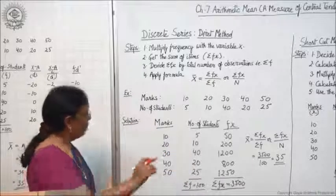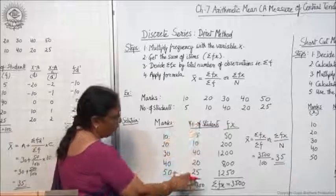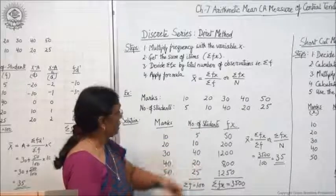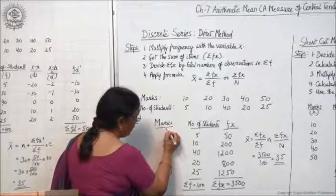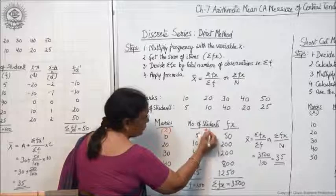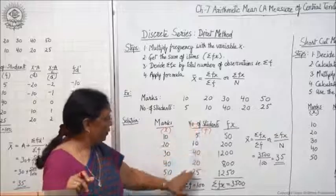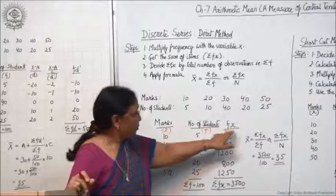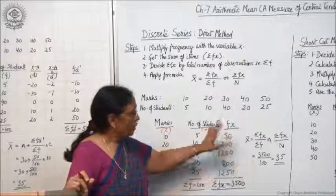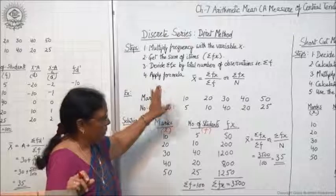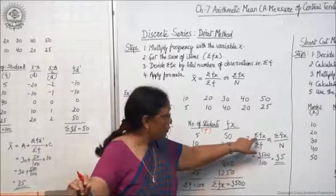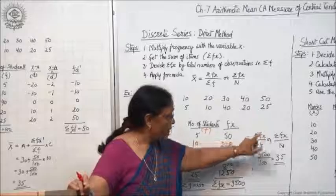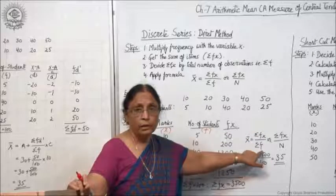See this table here — the same table for solution I have written down in this form. The data given here is marks and number of students. Now marks will be the x column, number of students will be frequency because this shows the frequency of children in a particular category of marks, and the third column will be fx. Now in this case of direct method, the formula to be applied is x̄ = σfx / σf.